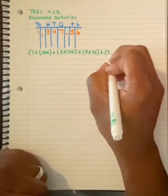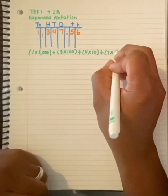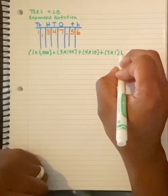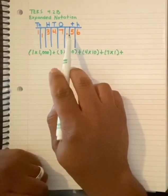That's right. Seven groups of ones. Let's continue.